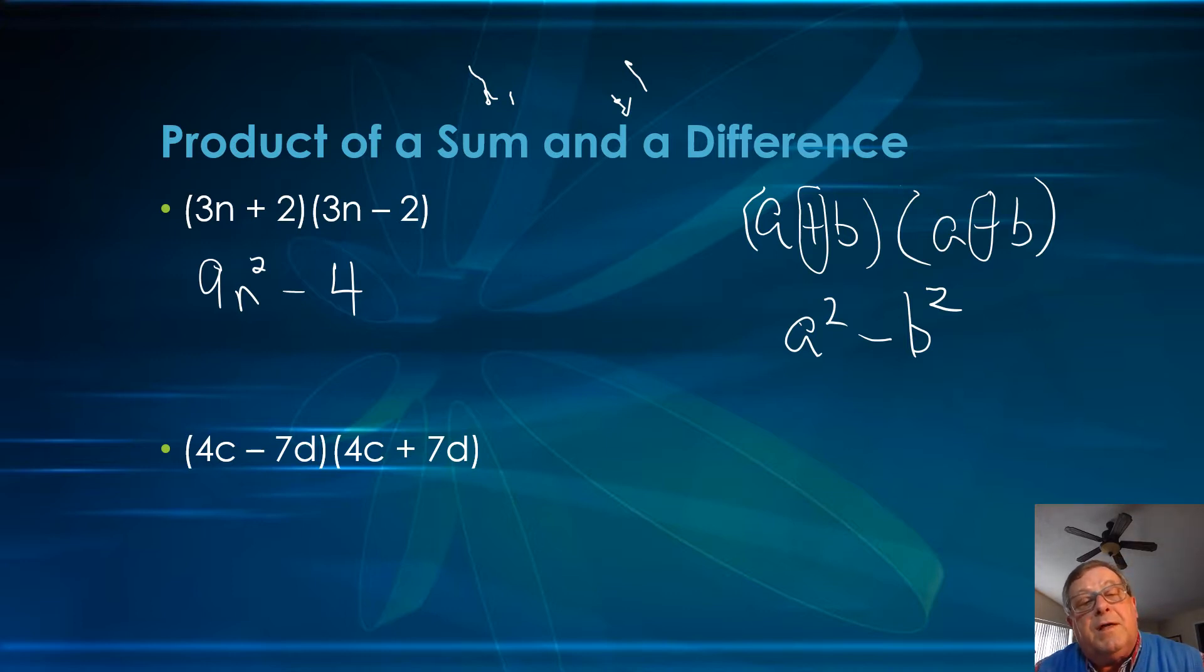In fact, let's just do a little bit. If I did 3n times negative 2, that's negative 6n. And 2 times 3n would be positive 6n. The negative 6n and the positive 6n would have the effect of canceling each other out, and we'd just end up with a squared minus b squared.